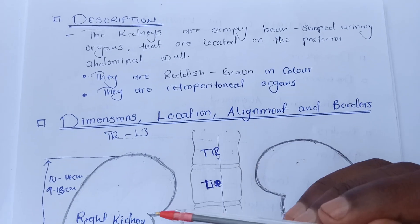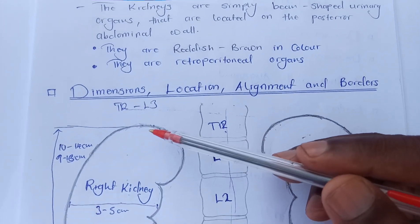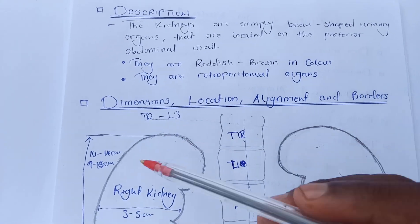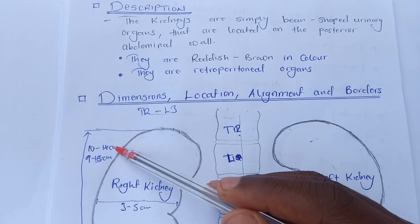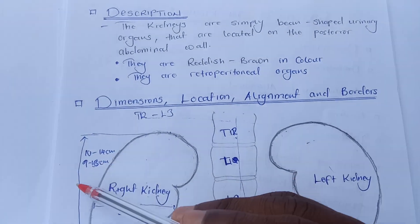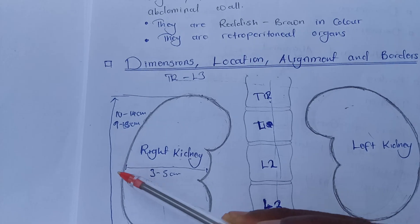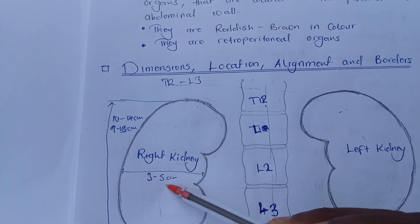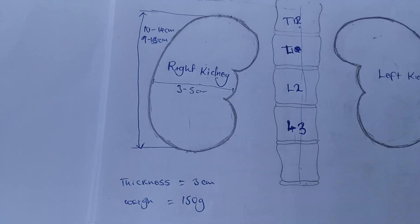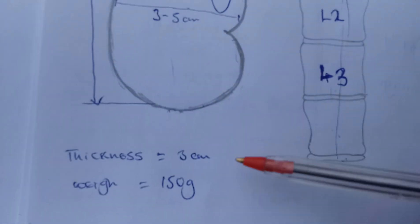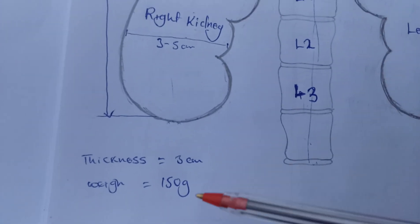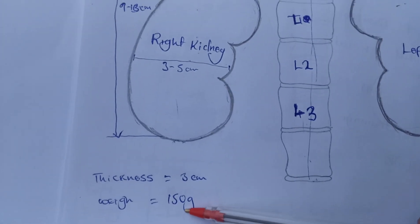What are the dimensions of the kidneys? The length in males is about 10 to 14 centimeters and in females about 9 to 13 centimeters. The width is about 3 to 5 centimeters, the thickness is about 3 centimeters, and the kidneys weigh about 150 grams.